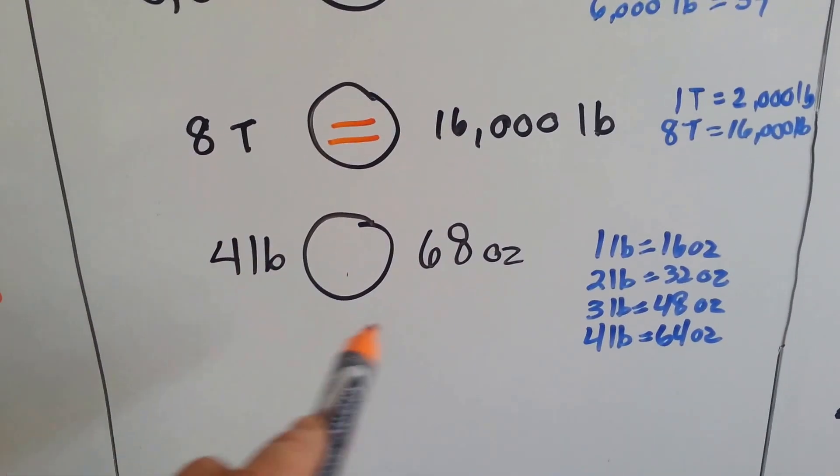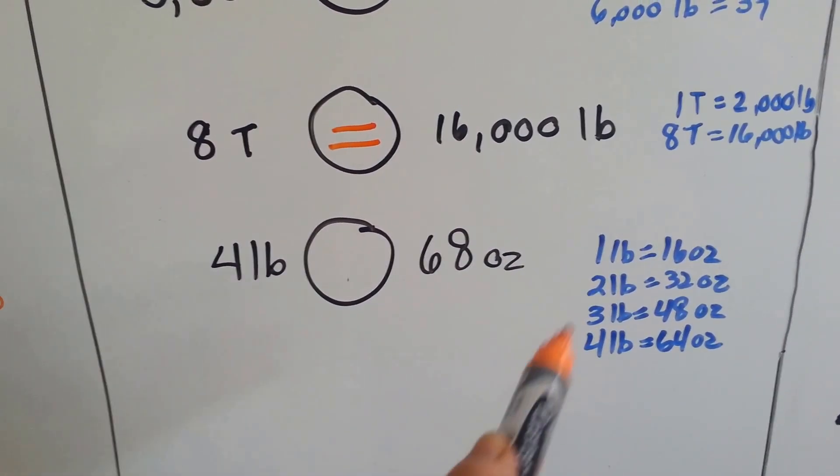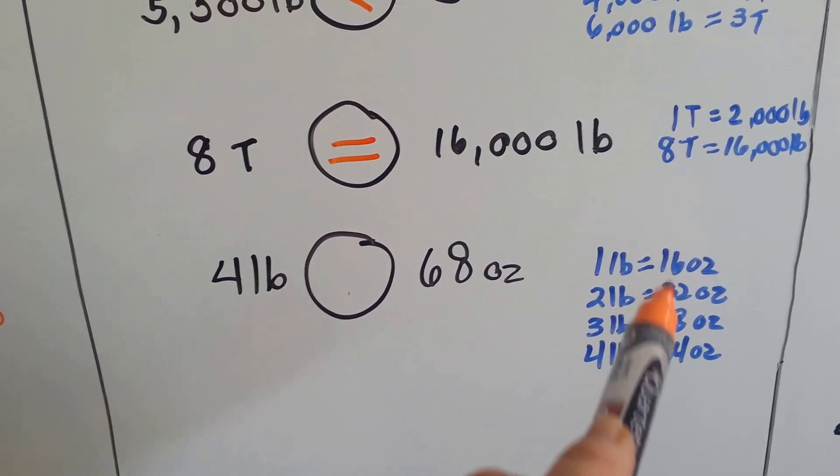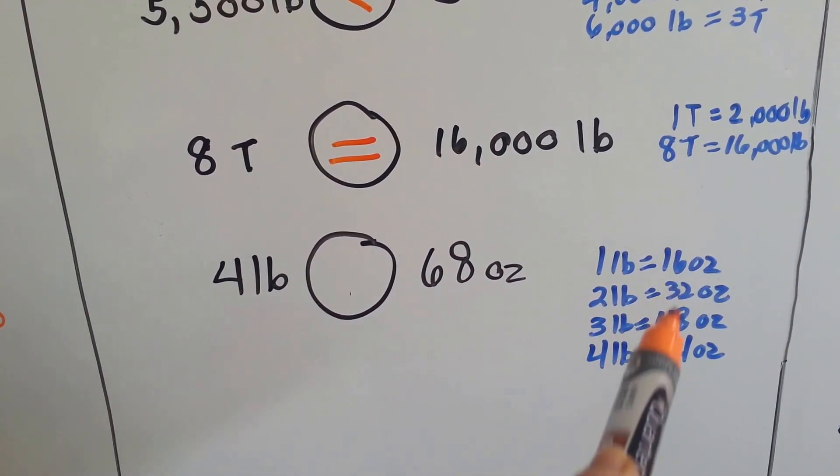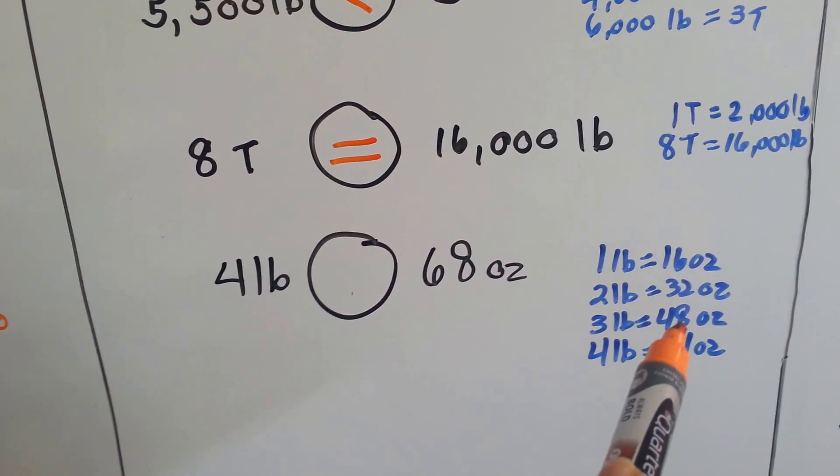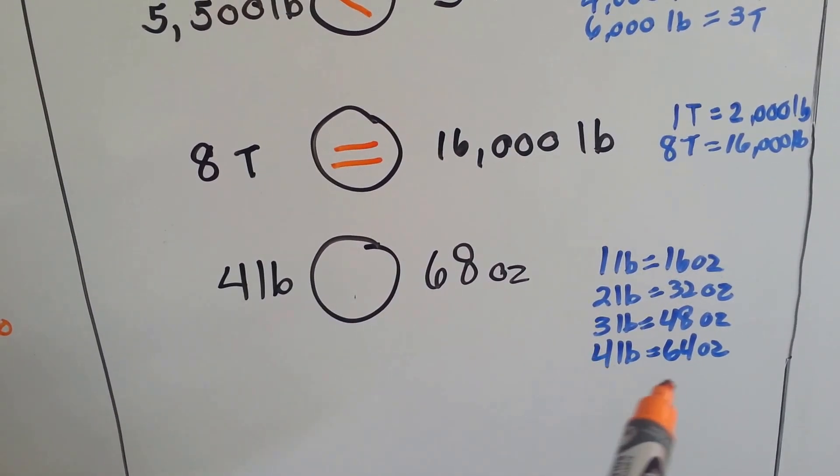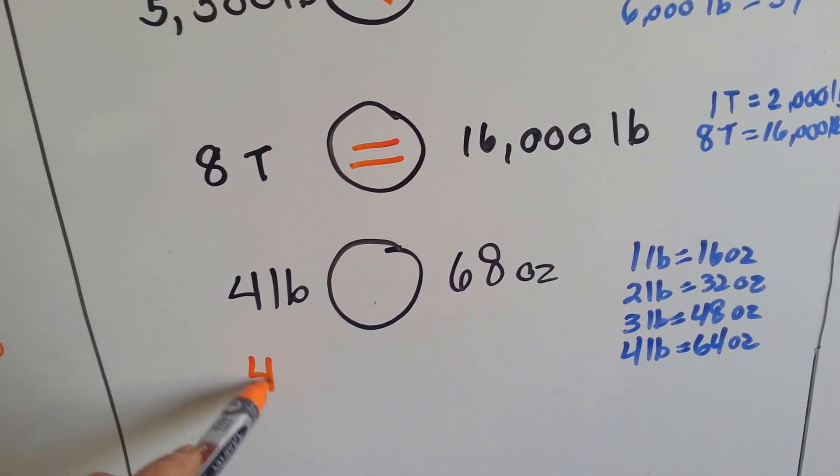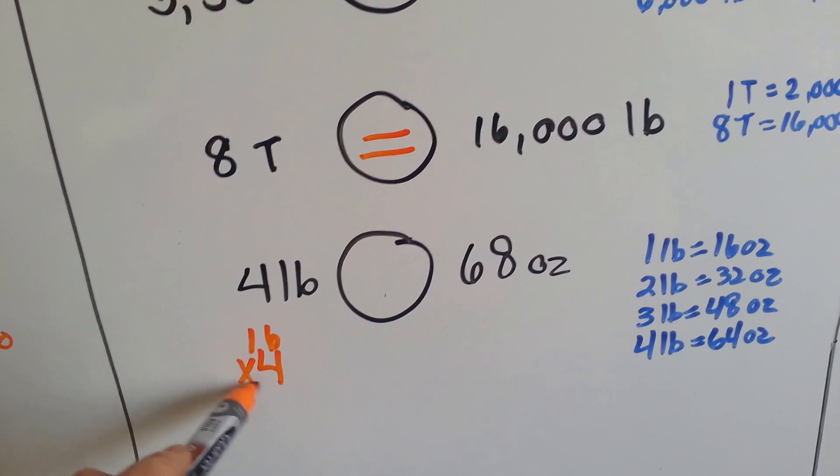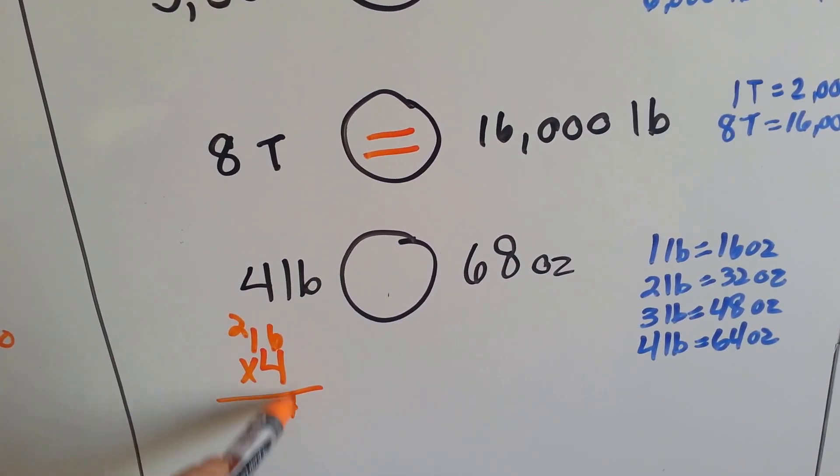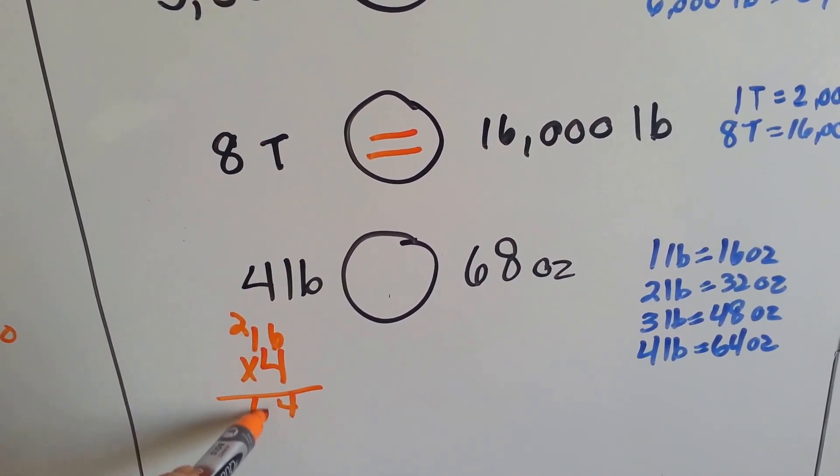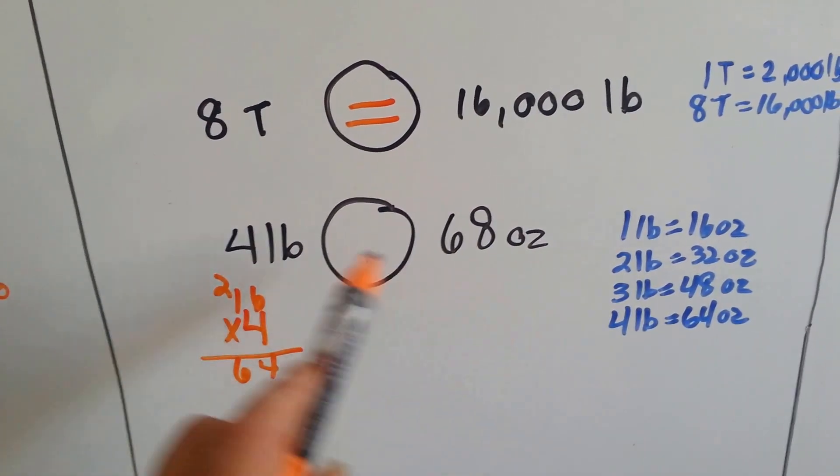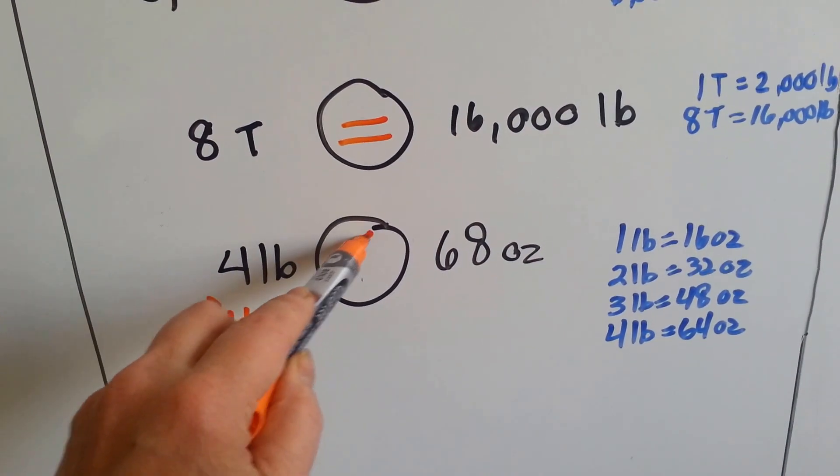How about here? 4 pounds or 68 ounces? Well, 1 pound is 16 ounces. 2 pounds is 32 ounces, because we double it. 3 pounds, we add another 16 to it that becomes 48. 4 pounds is 64 ounces. Or, we could have just done 4 times 16, right? We could have done a multiplication problem. And we could see that the 4 pounds is 64 ounces. So, 68 ounces is more, isn't it?